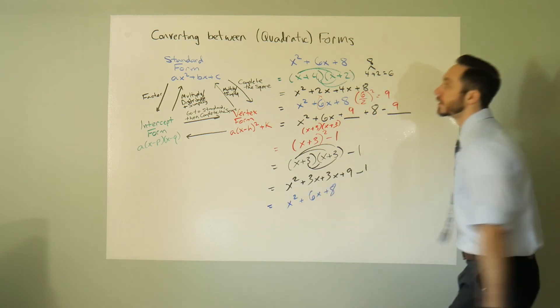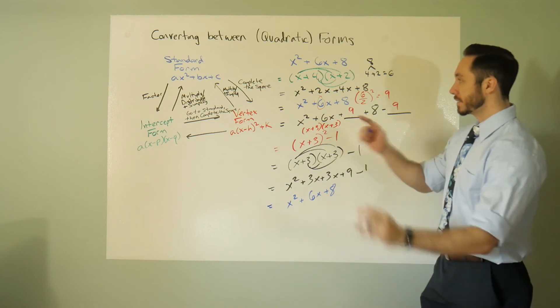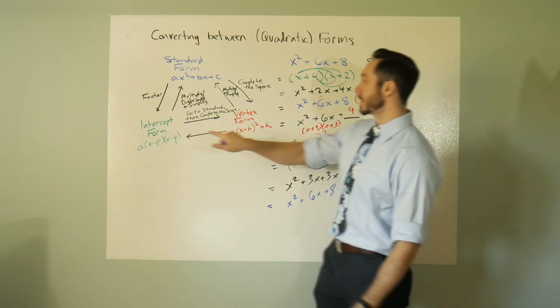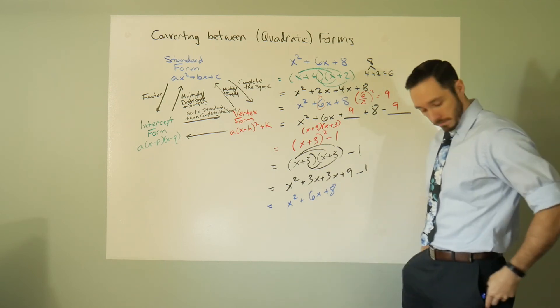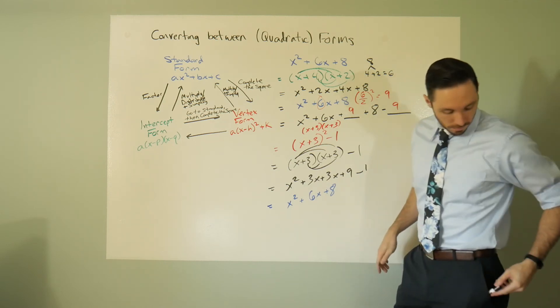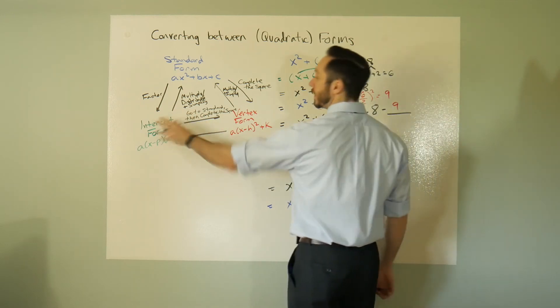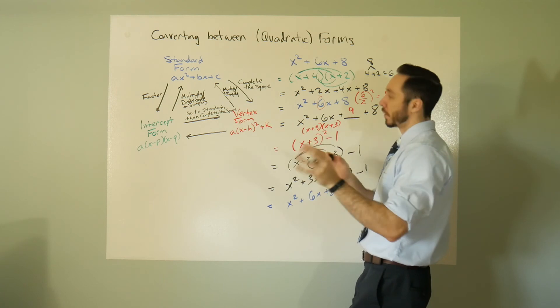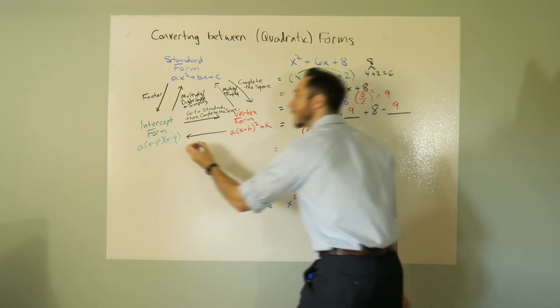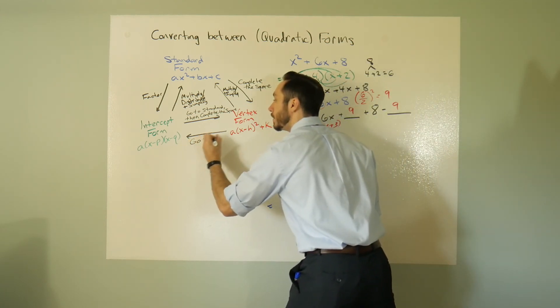Okay, so our last piece of the puzzle here is from vertex into intercept. Well, just like how from intercept to vertex you had to go to standard then complete the square, it's more or less the same result. For vertex you have to go to standard.